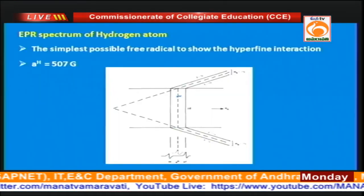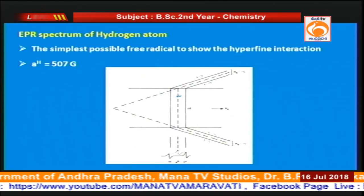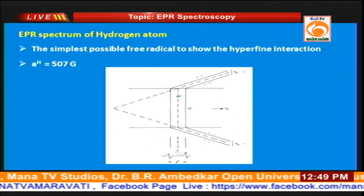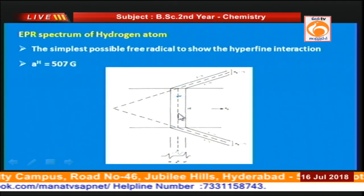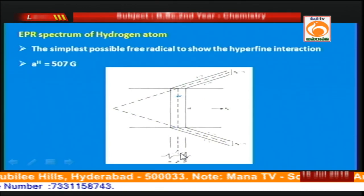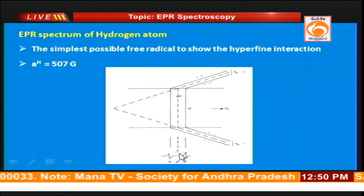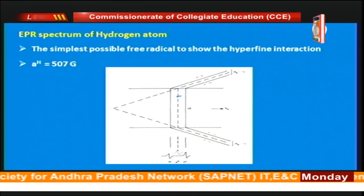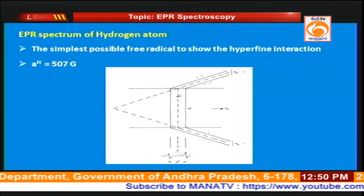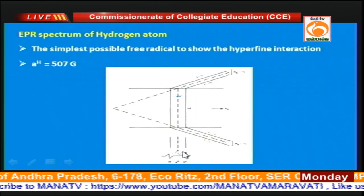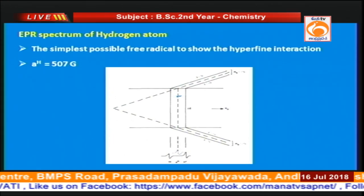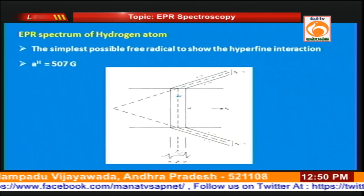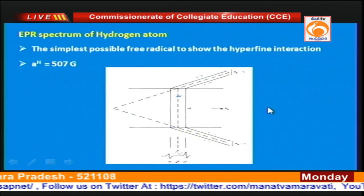This is the ESR spectrum of the hydrogen atom. The hydrogen atom is the only atom containing a single unpaired electron. The dotted lines indicate that there would be only one line if there were no coupling between the single electron and the surrounding nucleus. But since the surrounding nucleus does couple, we get two lines. Applying the formula 2NI + 1 with N = 1 and I = 1/2 for the proton gives 2. The hyperfine coupling constant value is very high, equal to 507 Gauss.